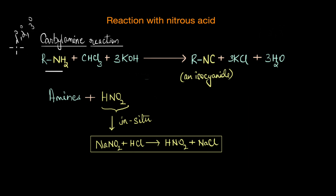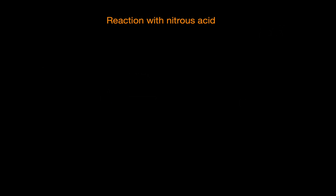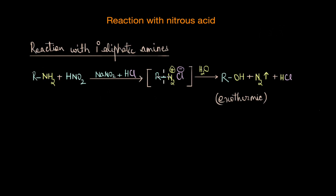The three classes of amines — primary, secondary, and tertiary — react differently with nitrous acid. Let's see how they differ and what products are formed in each case. First, let's look at the reaction with primary aliphatic amines.